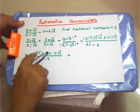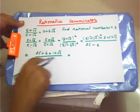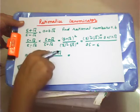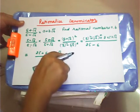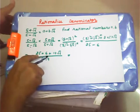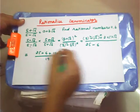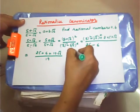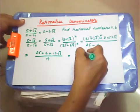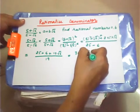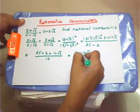Now 25 plus 6 — we add the rational numbers together. Rational numbers are added to rational numbers and the irrational number stays separate. We get 31 plus 10 root 6 upon 19.